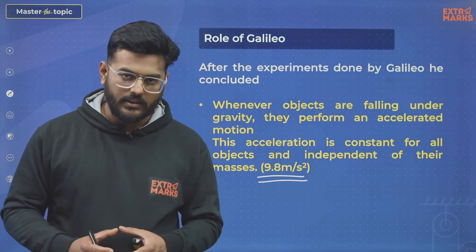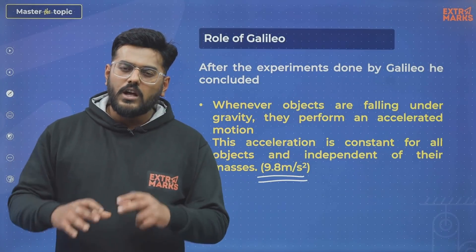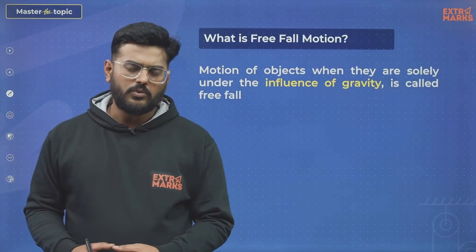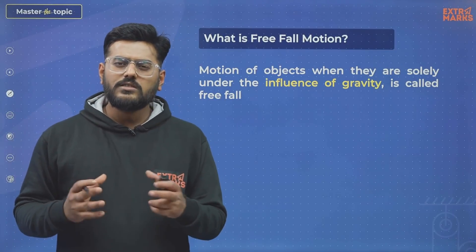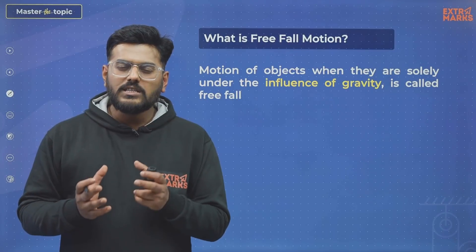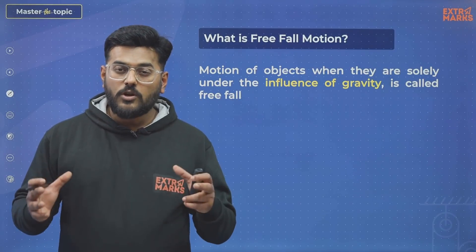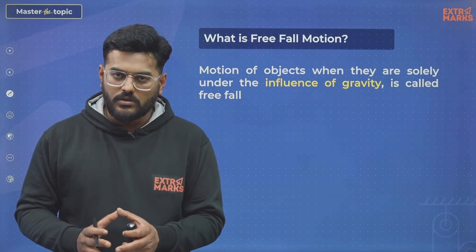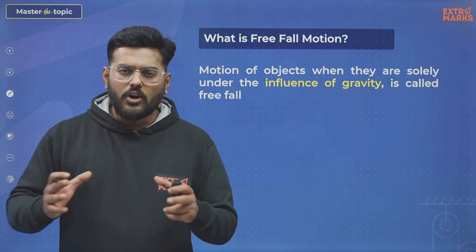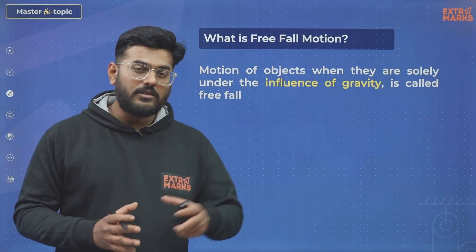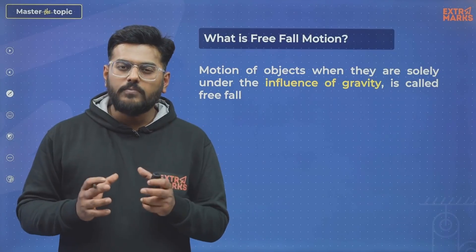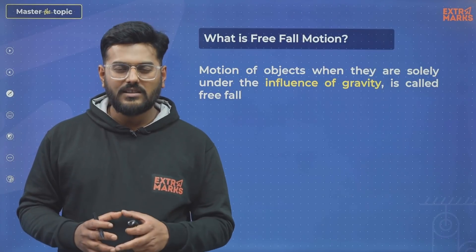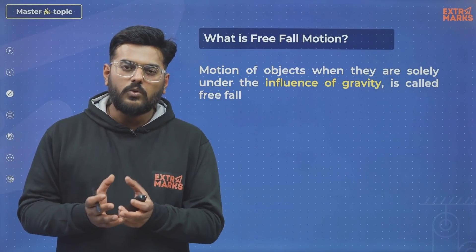Based on this, we can conclude what Free Fall Motion actually is. Free Fall Motion is the motion of an object when it is experiencing forces only due to gravity. The motion of any object, if it is only and only under the influence of gravity, is Free Fall Motion. We have to neglect the effect of air resistance and cannot take into account any other forces acting on the object.